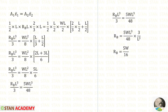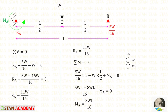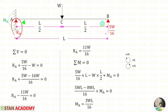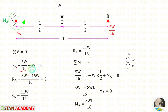Finally we have derived an expression for RB which is 5W upon 16. Now let us apply sigma V equals 0 to find RA. RA and RB are acting upwards so both are positive; W is acting downwards so it is negative. Taking LCM, 16 into W gives 16W. Finally for RA we get 11W upon 16.